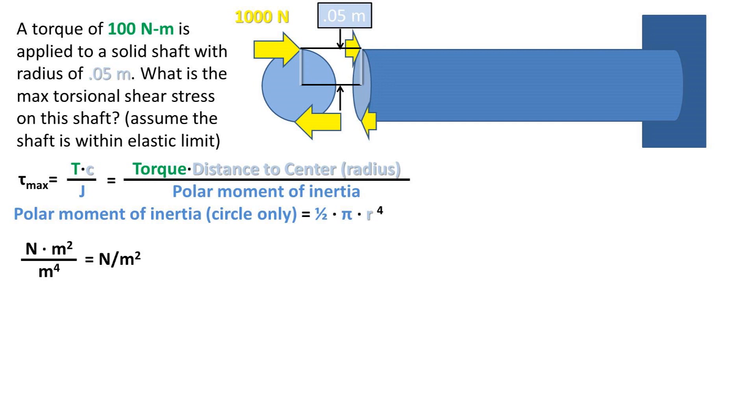Let's take a look at the unit analysis for the torsional shear stress formula. We have newtons times meters squared in the numerator and meters to the fourth power in the denominator. This means that once we cancel out the meters squared, we are left with our desired units of stress of newtons per meter squared.